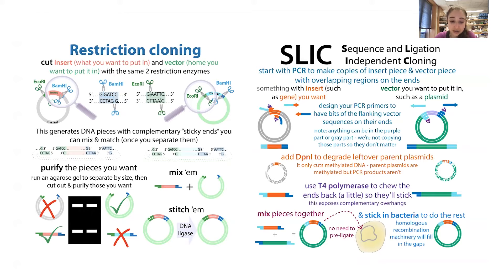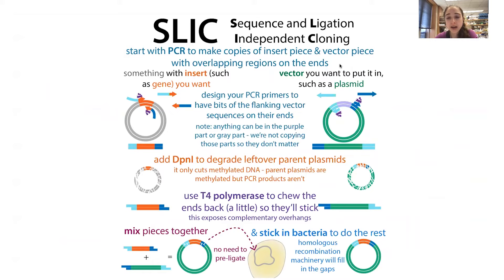The method I actually use when I'm cloning is SLIC — sequence and ligation-independent cloning. With SLIC, basically you're doing PCR of both the insert piece and the vector piece with overlapping regions on the ends. This starting point is similar to what I was talking about before with introducing sequences in your primers — except here, instead of adding sequences with cut sites, we're adding sequences that match the thing we want to stick it into. So we're going to have sequences that overlap on the ends.